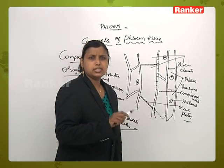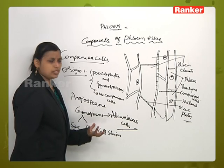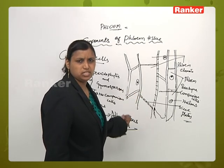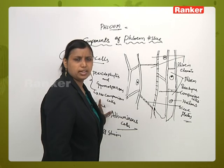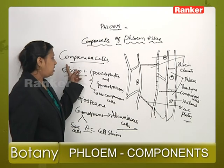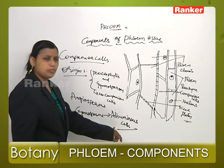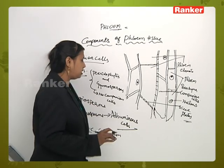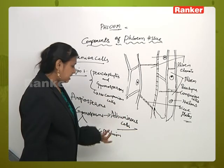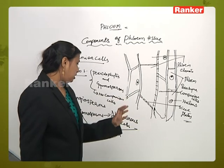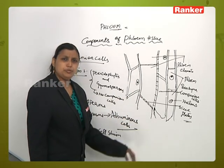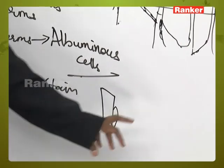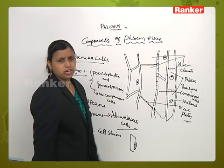When we compare companion cells and albuminous cells, they are structurally, morphologically, and functionally similar — they do more or less the same function: storage of food material. They are specialized parenchyma cells seen in the phloem, whether as Strasburger cells, companion cells, or albuminous cells. To identify albuminous cells under microscopy: if cells are stained, those are albuminous cells. Companion cells are present adjacent to sieve areas or sieve tubes.